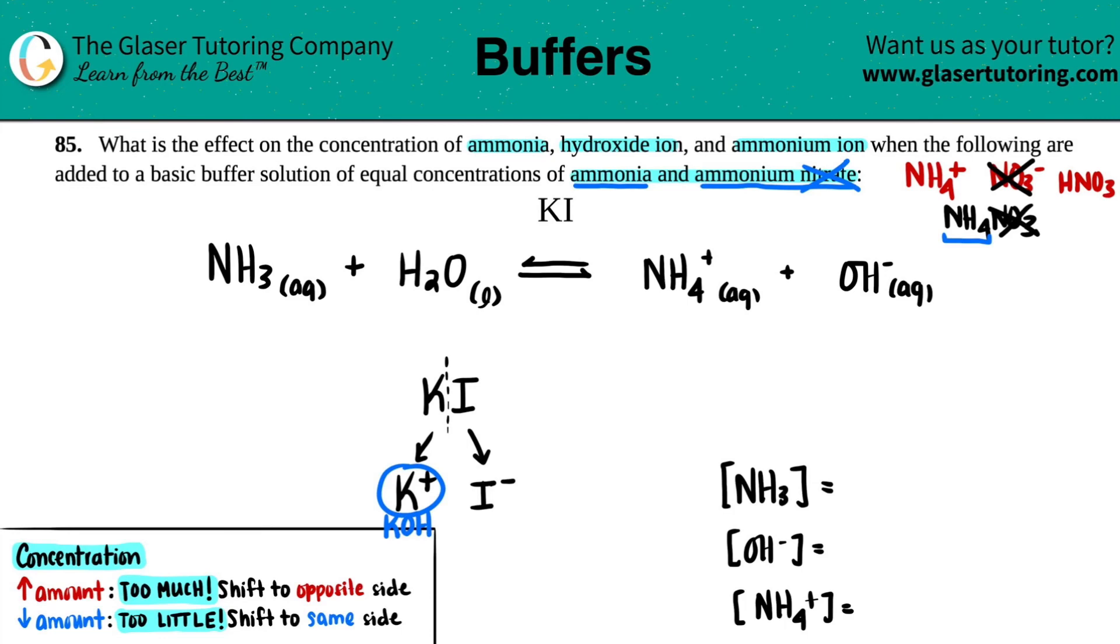And just like the reasoning going back to here, if you came from something that's really, really strong, the conjugate is going to be so weak that it's classified as neutral. So we don't even care about this component. But if we do the same thing for I, this came from HI, which is a really, really strong acid. So the conjugate is so weak that we don't care about it.